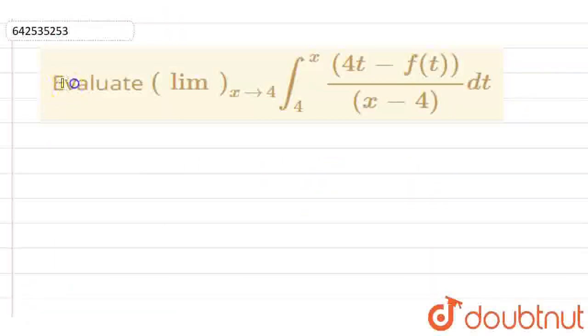Hello everyone, in this question we have to evaluate limit x tends to 4, integration x to 4, and we have function as 4t minus f(t) divided by x minus 4 dt.